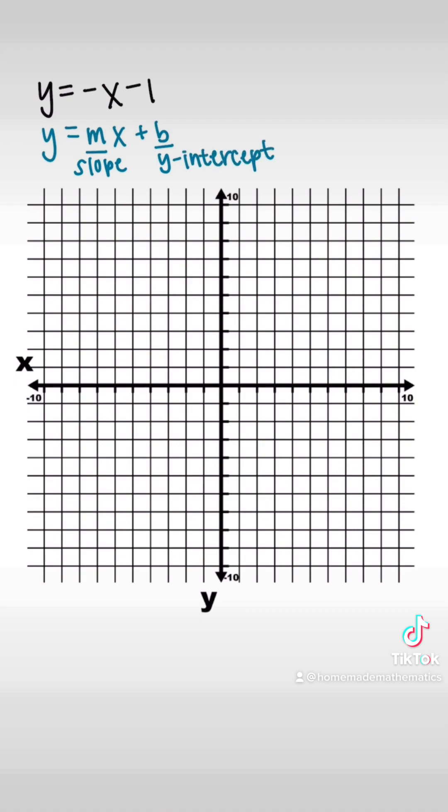So we want to start with our y-intercept because then we can just go ahead and graph that point wherever it crosses our y-axis, which in this example is negative one. So I'm going to go to negative one and I'm going to make my first point.